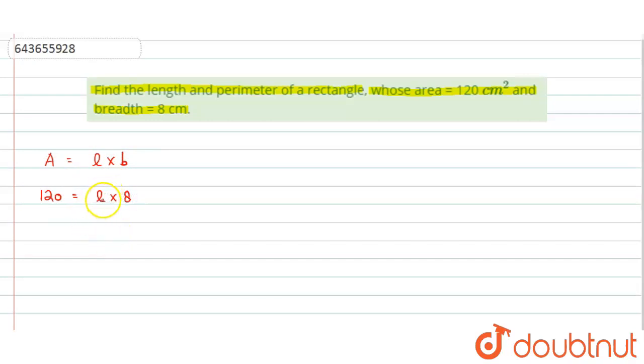So we just need to find this length from here. So l will be equal to 120 by 8, and you can just cancel this by 4. So this will be 30 here and this will be 2 here, and finally we will get the value of length equals to 15 centimeter. So this is the value of length of the rectangle.